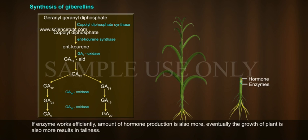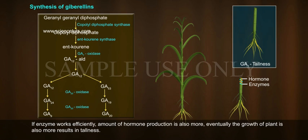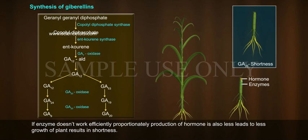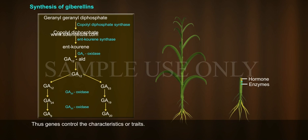How do proteins control the characteristics? Let us learn by comparing an example of tallness. Plants secrete chemical substances called hormones which enhance the growth of the plant, and enzymes are essential for the production of hormones. If the enzyme works efficiently, the amount of hormone production is more, and eventually the growth of the plant is also more, resulting in tallness. If the enzyme doesn't work efficiently, production of hormone is less, leading to less growth of the plant, resulting in shortness. Thus, genes control the characteristics or traits.